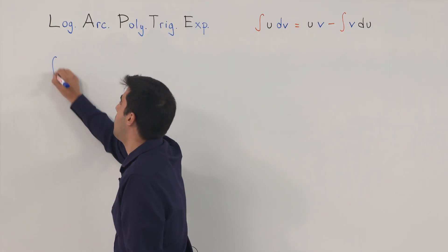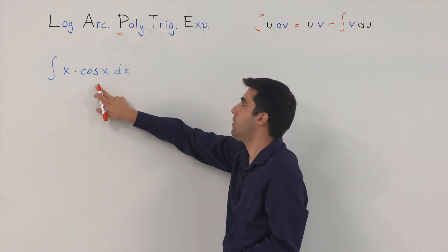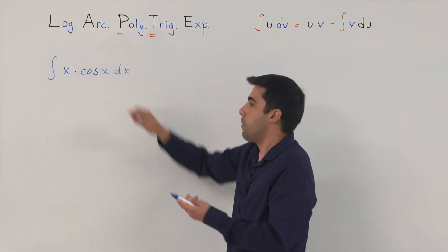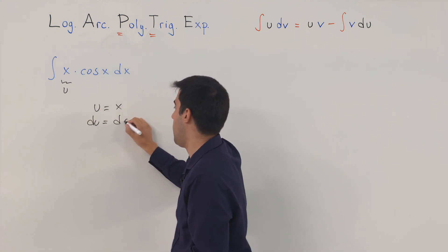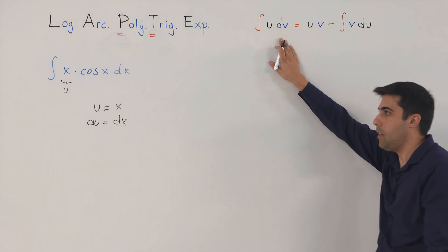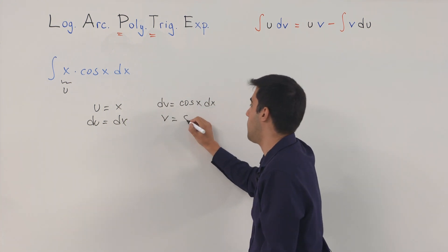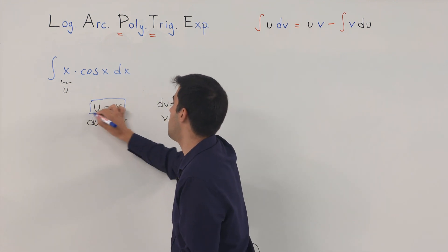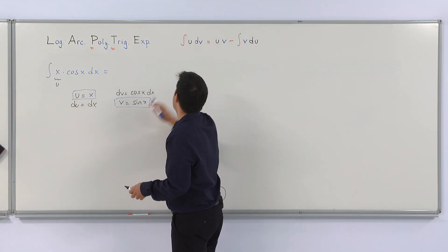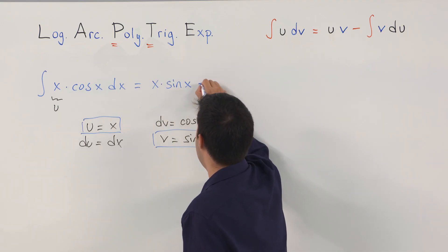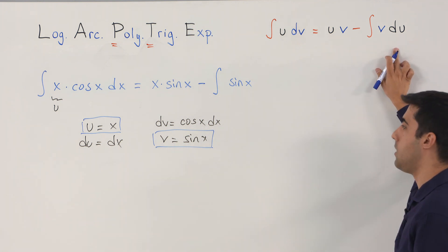Our next example is the integral of x times cosine(x) dx. Here we have a polynomial x and a trigonometric function cosine(x). That means we label the polynomial as u. So u is x, du equals dx. What is left is dv, so dv equals cosine(x) dx. Integrating both sides, v is sine(x). So we have u equals x and v equals sine(x).